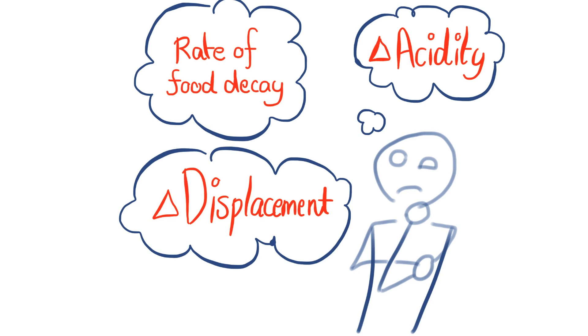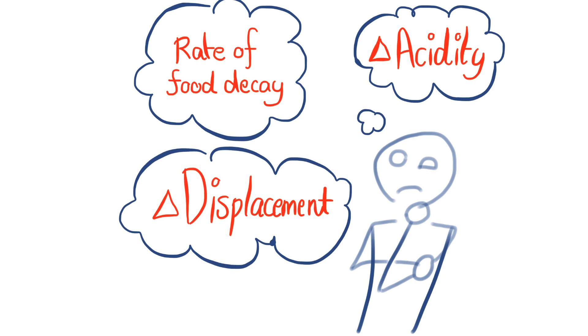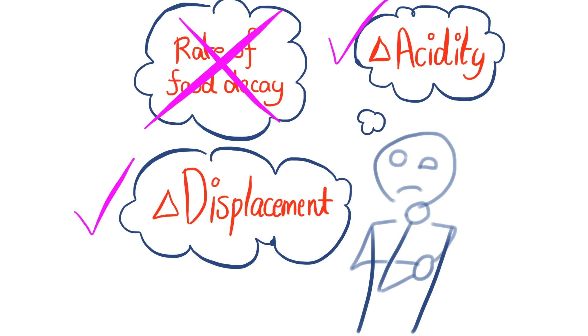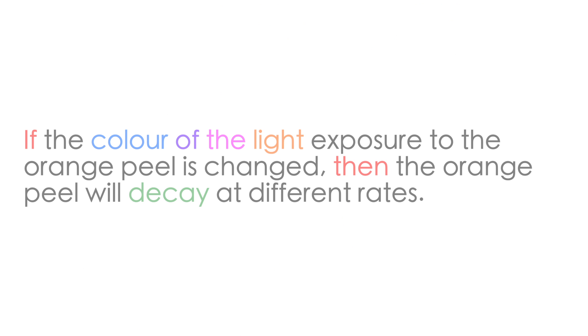In senior science you may be given the freedom to choose the variables that you'll be testing and how you'll be testing them. The biggest mistake that students make is choosing variables which are not quantifiable. For example: if the color of light exposure to the orange peel is changed, then the orange peel will decay at different rates. In that example, there is no way to quantify what each color is — what wavelength of light that is.